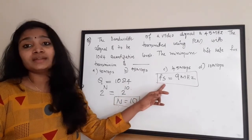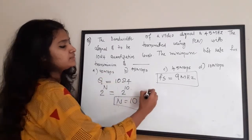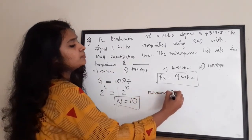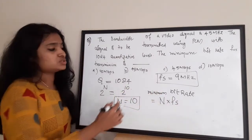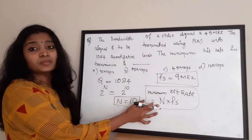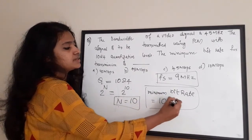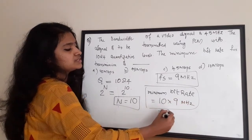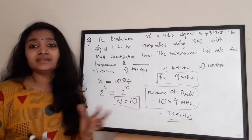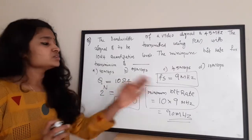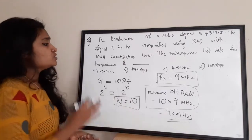The number of bits N is 10 and the sampling rate Fs is 9 megahertz. The minimum bit rate equation is: bit rate = N × Fs. So bit rate = 10 × 9 megahertz = 90 megahertz, which is 90 megabits per second or 90 Mbps. The correct answer is option A, which is 90 Mbps.